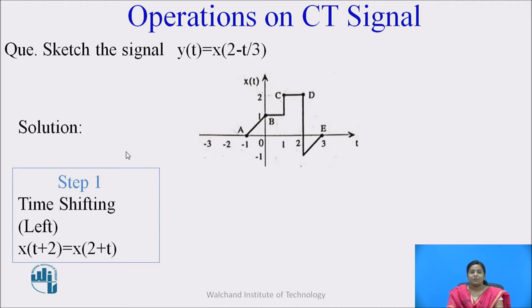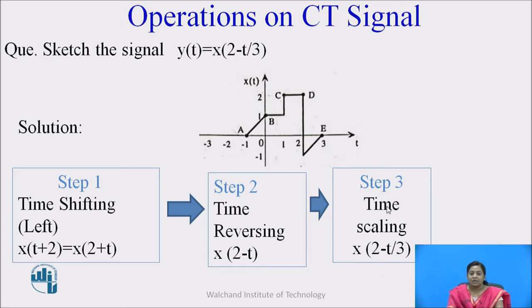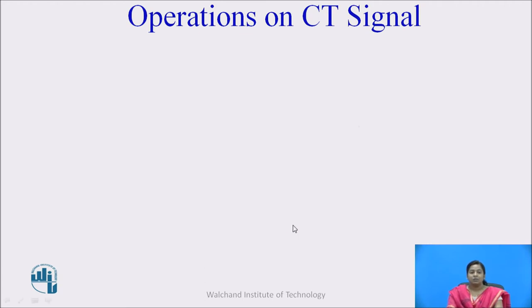The first step: apply the time shifting property on x(t). We require x(2 + t) first, so we shift the signal towards the left side by 2 units. The second step: apply the time reversal property on the step 1 output — x(2 + t) becomes x(2 - t). The third step: apply the time scaling property on the step 2 output, expanding the signal by factor 3, giving x(2 - t/3).